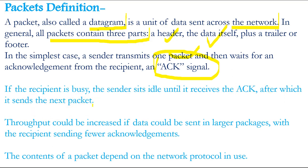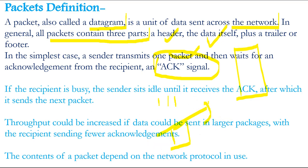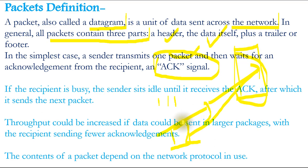If the recipient is busy, the sender sits idle until it receives the acknowledgement, after which it sends the next packet. So data goes in the form of packets — if you have one PC sending to another PC, it sends one part of data and waits for acknowledgement. Once acknowledgement is received, it sends the rest of the data. You may have noticed videos buffering online — that is a related concept.